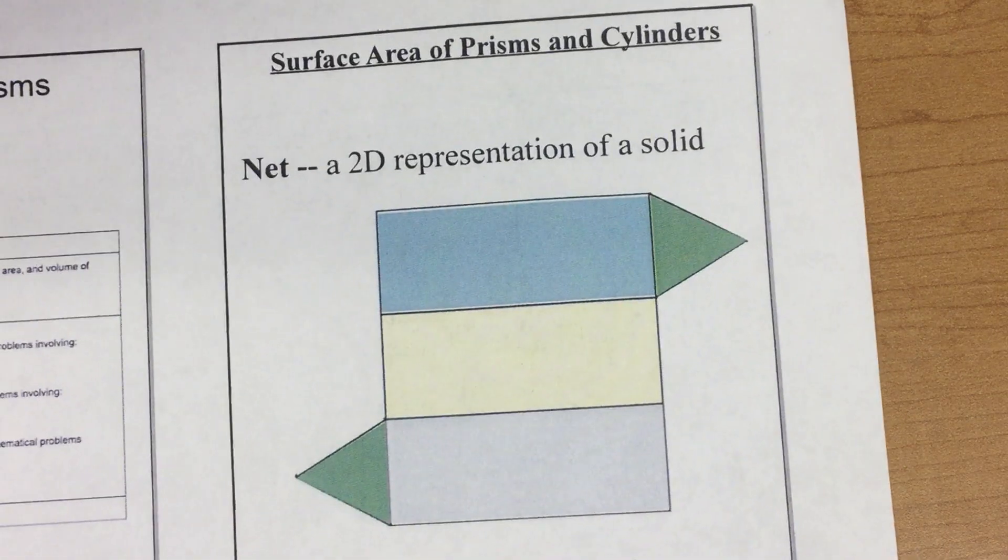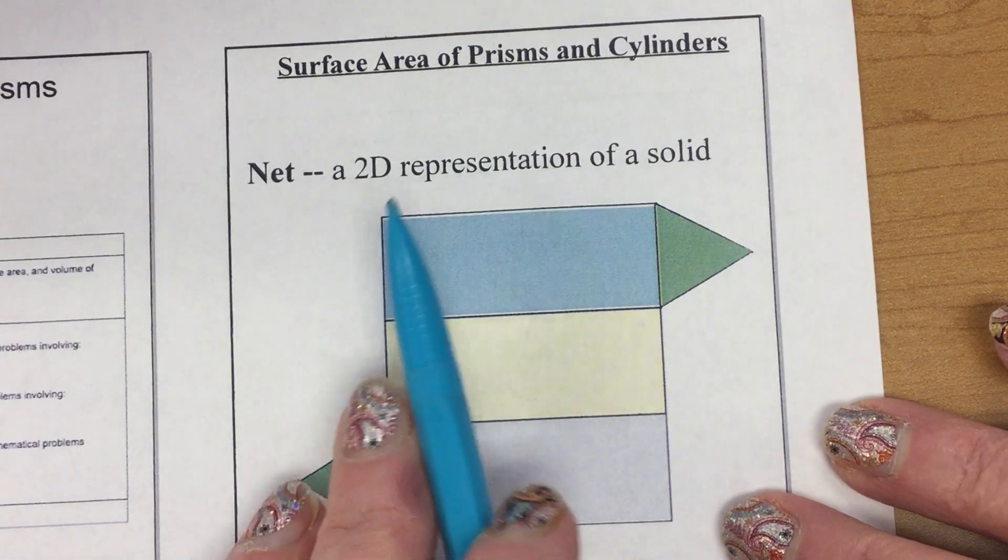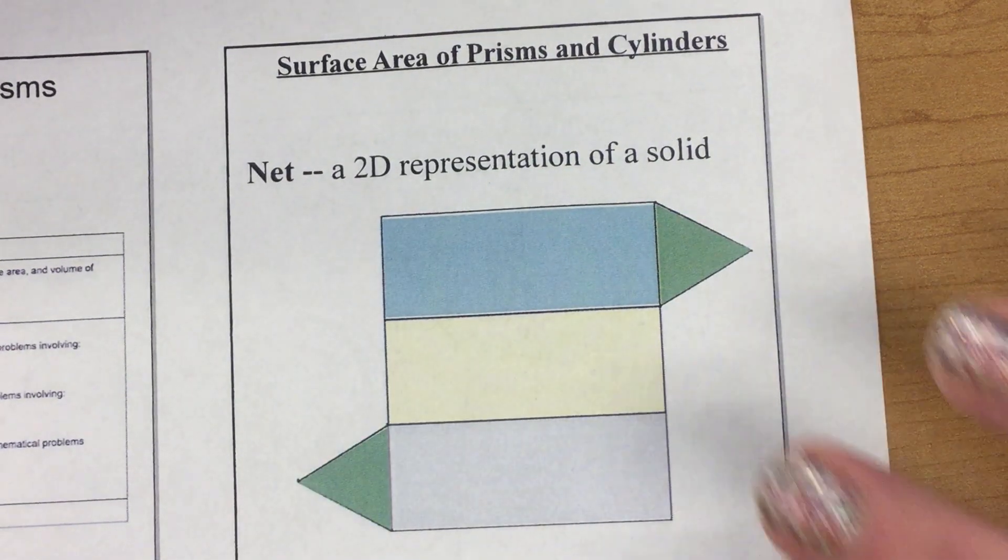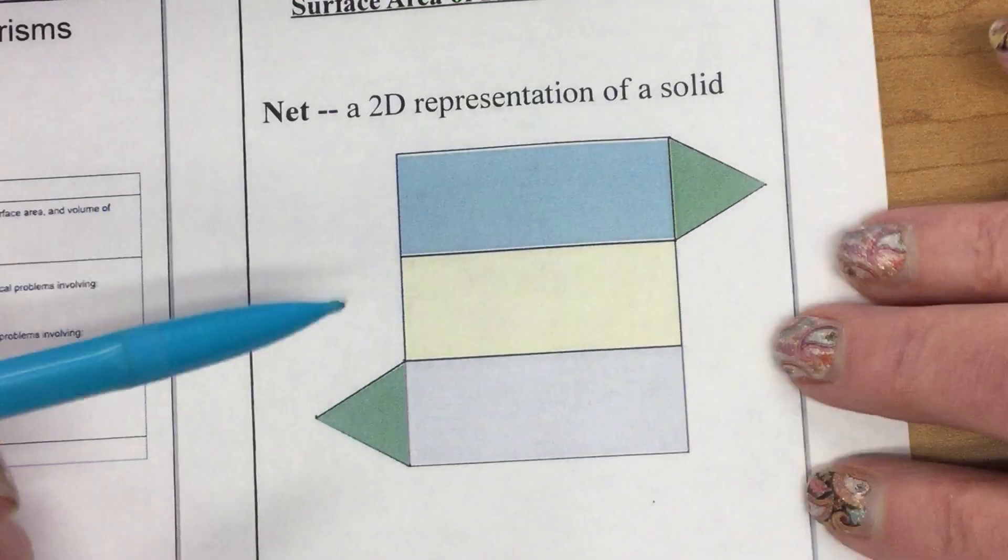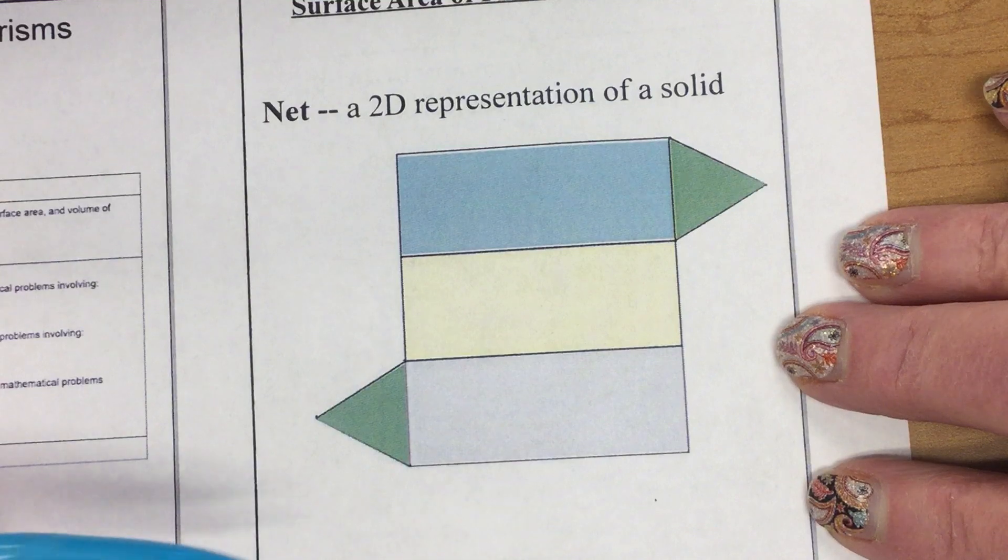This is called a net, a two-dimensional representation of a solid. If I took a solid and cut it apart and laid it flat, what would it look like? And if I folded it back up, what would I get?